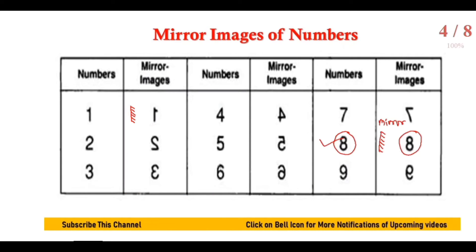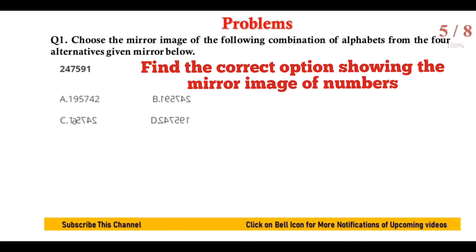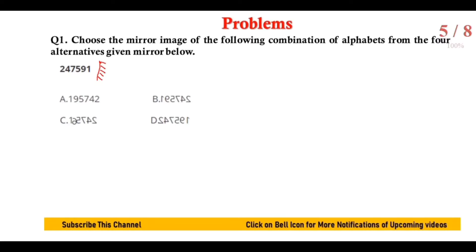Based on this we will solve some problems and see how the reflected images are formed. This is the first problem: choose the mirror image of the following combination of alphabets or numbers from the four alternatives given. The mirror is kept here and the number is 2 4 7 5 9 1.